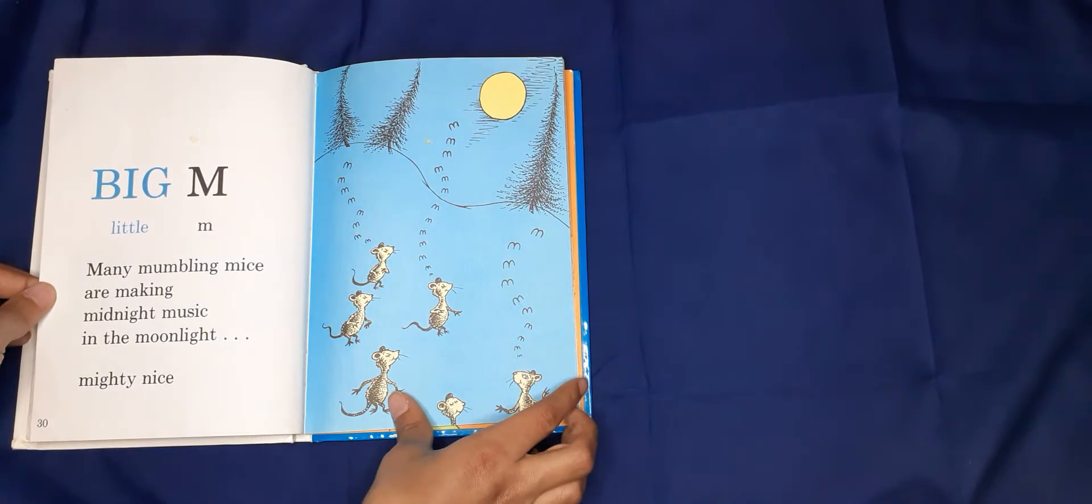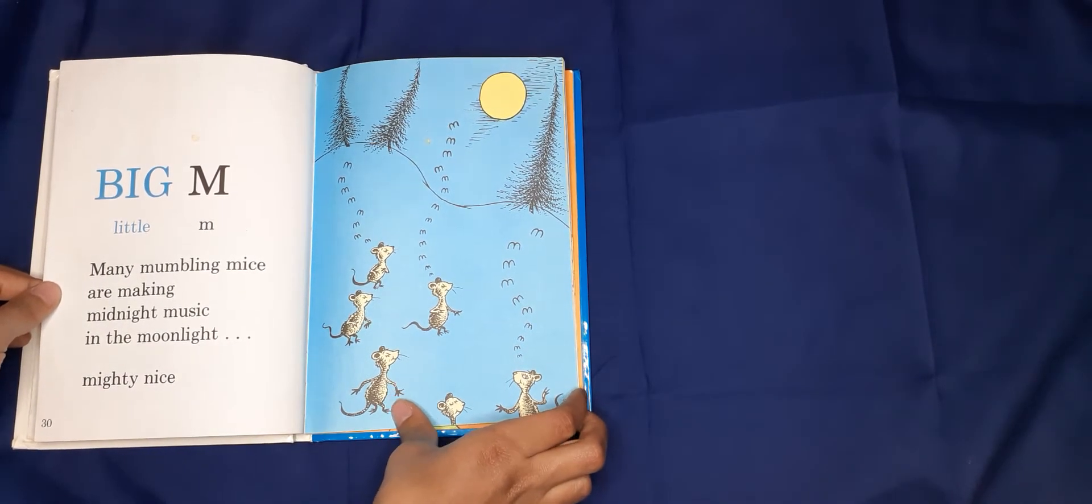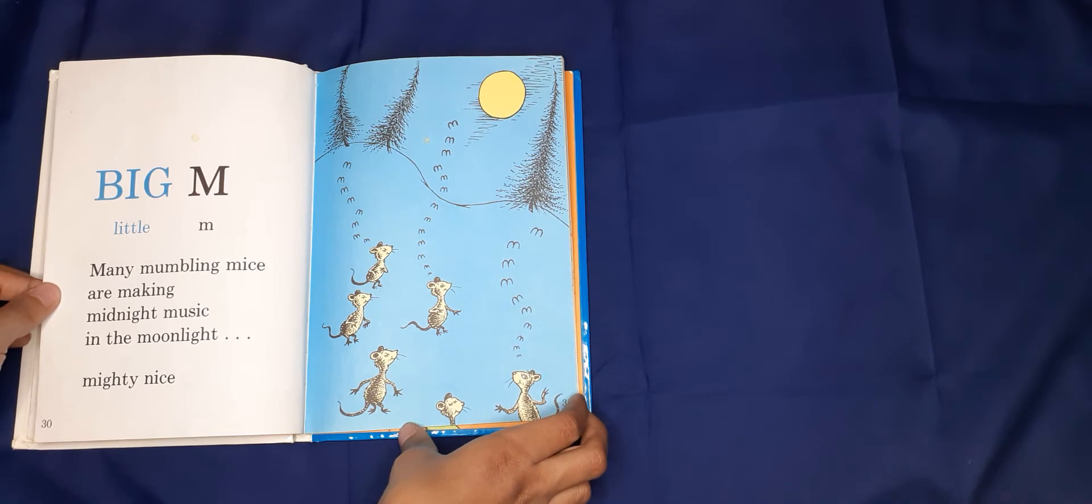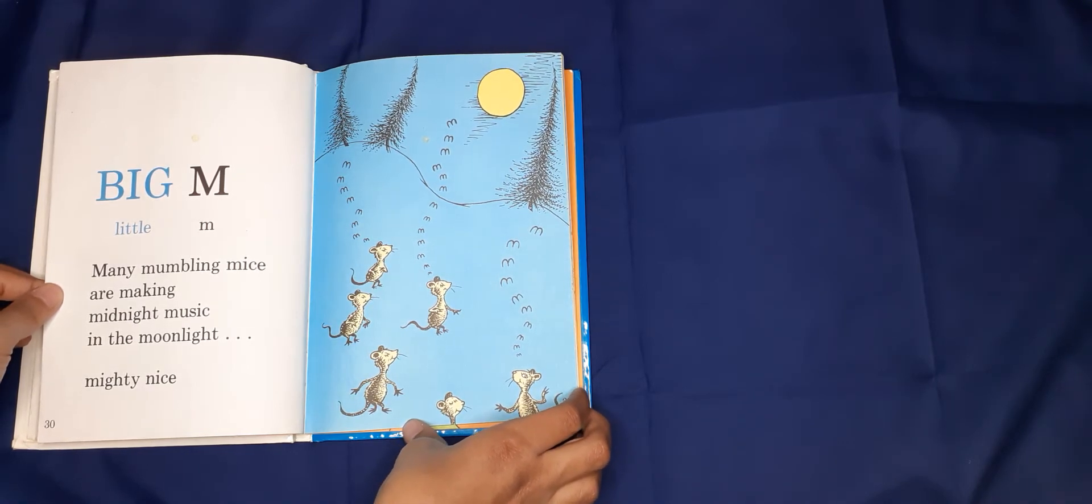Big M, Little M. Many mumbling mice are making midnight music in the moonlight. Mighty Nice.